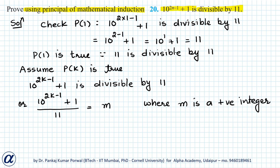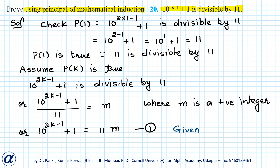Or this I can write as 10 to the power 2k minus 1 plus 1 equals 11M. I can call this equation (1), and I can use this to prove P(k+1).